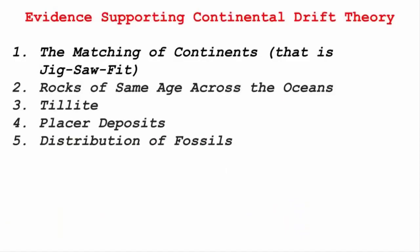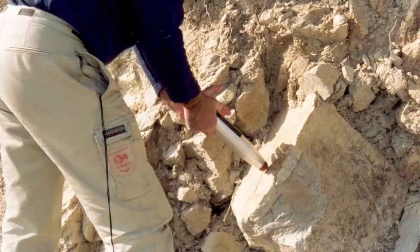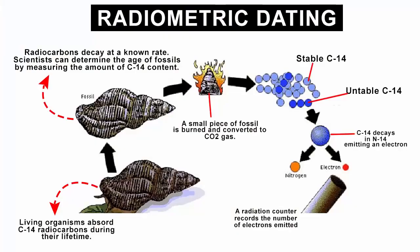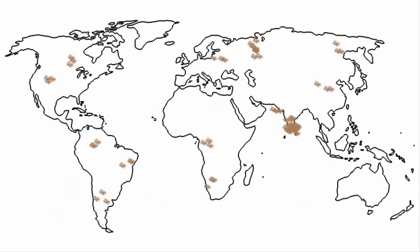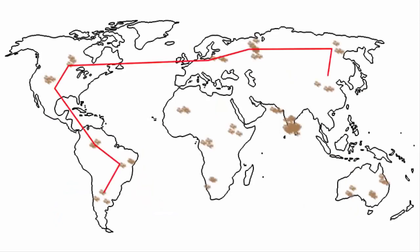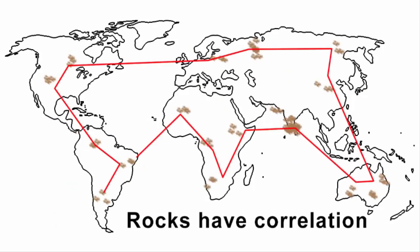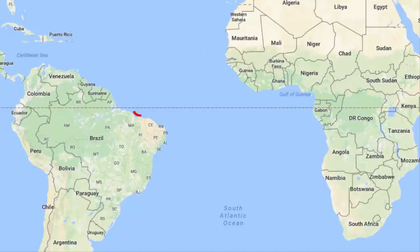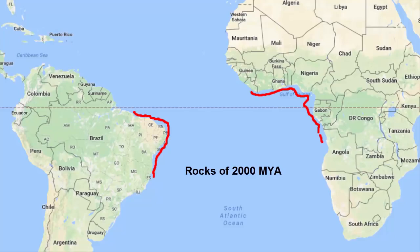The second evidence shows rocks of the same age across the oceans. Scientists around the globe have tested rocks at various places by a method called radiometric dating. Radiometric dating is a technique used to date materials such as rocks or carbon. After using this technique, they came to a conclusion that all the rocks from different continents have a correlation.